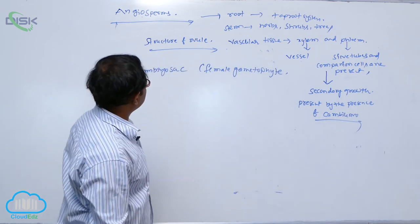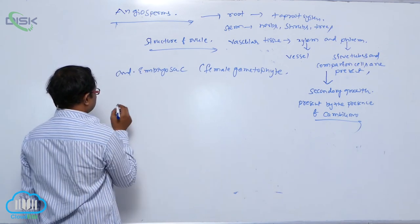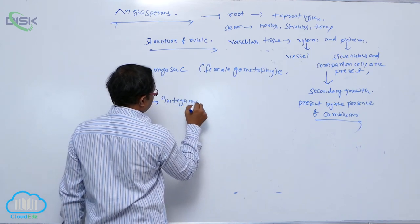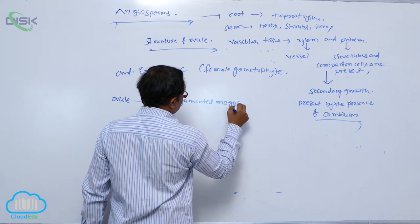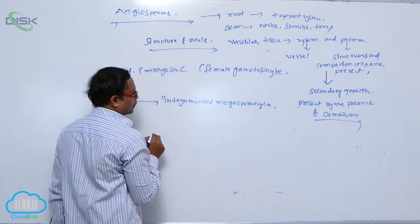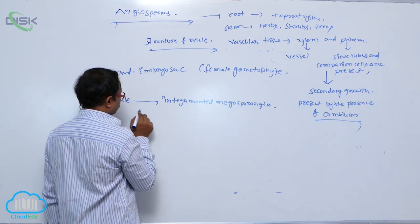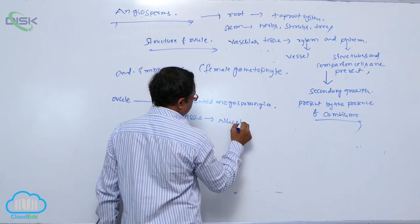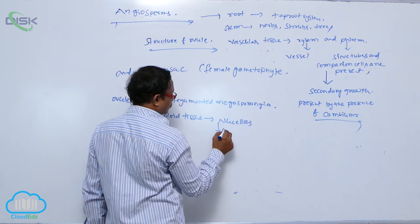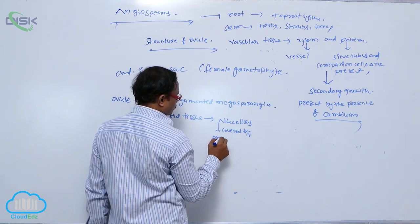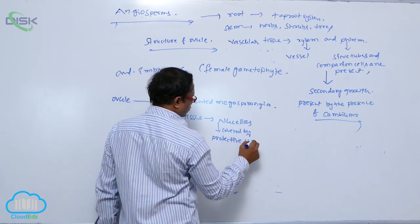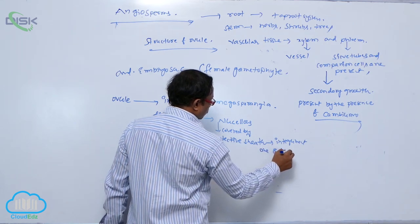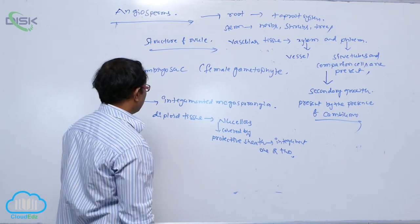In the structure of the ovule and embryo sac — the female gametophyte — the ovule is known as an integmented megasporangium. Deep inside the ovule, a diploid tissue is present known as the nucellus. This nucellus is covered by a protective sheath known as the integument. Integuments are one or two — in some plants one, in some plants two.